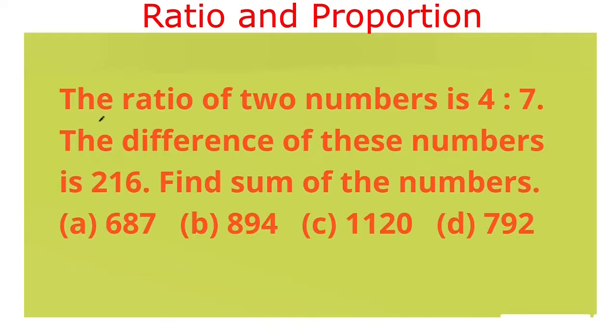Our question is the ratio of two numbers is 4:7. The difference of these numbers is 216. Find sum of the numbers.